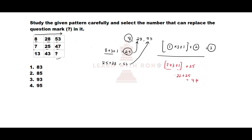The pattern is: first number multiplied by 3, plus 1, plus the second number gives the third number. Verifying with the second row: 7 times 3 is 21, plus 1 is 22, plus 25 is 47. Now applying the pattern for 13: 13 times 3 is 39, plus 1 is 40, plus 43 gives 83, which is option number 1.